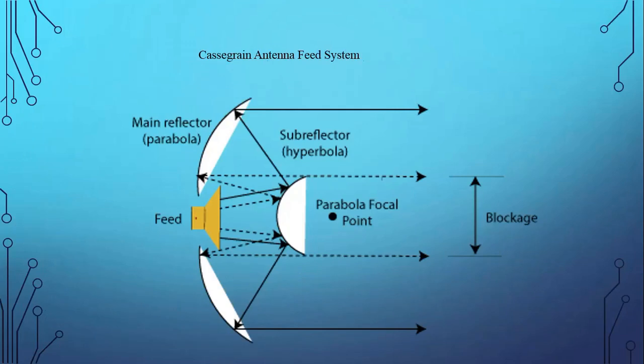Let's go inside the operation of a Cassegrain feed antenna. Here is the diagram of a Cassegrain feed system antenna. It consists of two parts: one is the main reflector, that is the parabola, and the other one is the sub-reflector, that is the hyperbola. Here we use the feed system as a horn feed, and it is placed at the vertex of the main reflector.